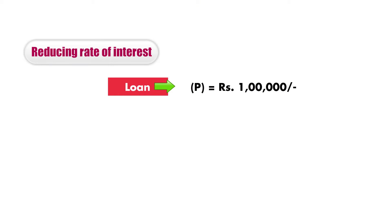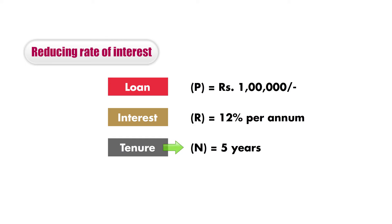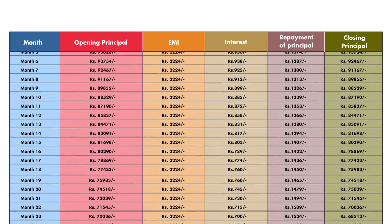Let's recall the example we used in our earlier video where the loan amount is Rs. 1 lakh at an interest of 12% for a tenor of 5 years. For simplicity, we will assume this is quoted as a reducing rate of interest and not a flat rate. We had calculated the EMI for this loan as Rs. 2,224, and used these parameters to construct an amortization schedule.